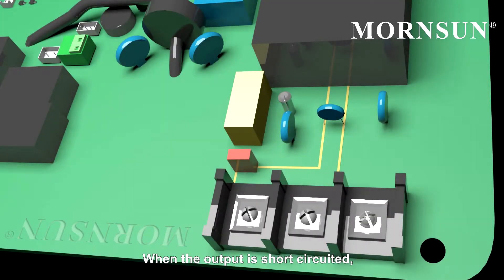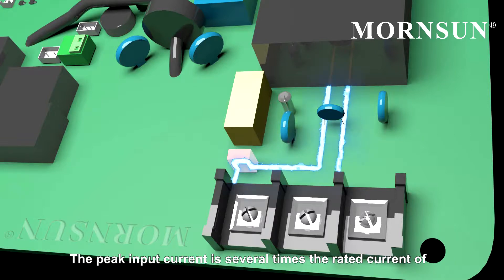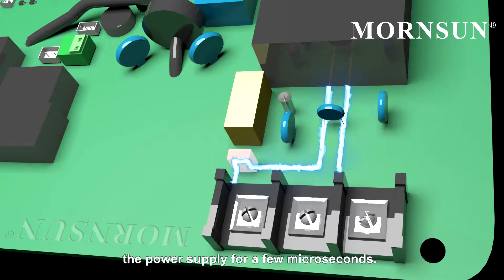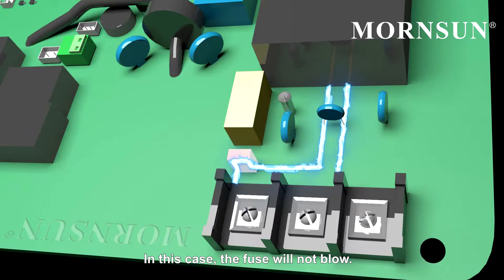When the output is short-circuited, the peak input current is several times the rated current of the power supply for a few microseconds. In this case, the fuse will not blow.